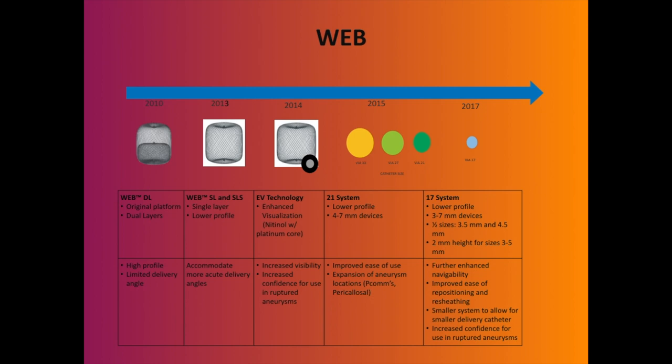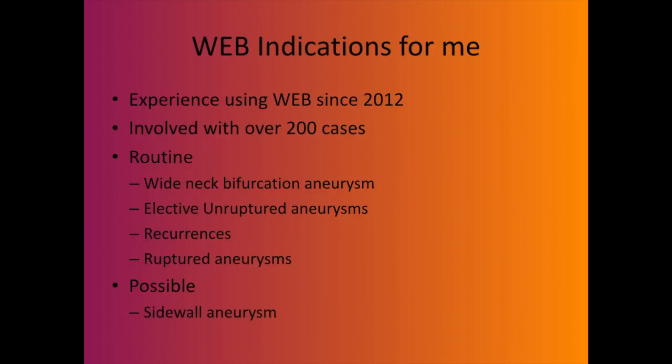The most popular intrasaccular device is the WEB, starting around 2010 to 2017 — I came in somewhere around 2012. It has improved significantly over time; we now have a 17-system with lower profile that can treat smaller aneurysms. In my indications over 200 or more cases: wide neck unruptured and ruptured aneurysms, recurrent aneurysms, and complex aneurysms.